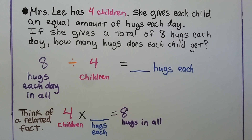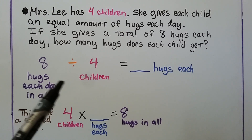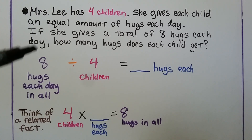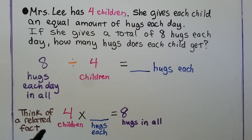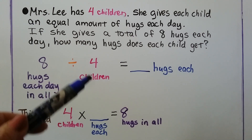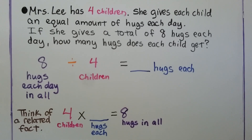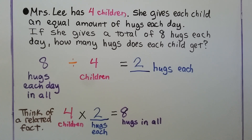Mrs. Lee has 4 children. She gives each child an equal amount of hugs each day. If she gives a total of 8 hugs each day, how many hugs does each child get? We know she's doing a total of 8 hugs each day. We know she also has 4 children. 8 divided by 4 is equal to how many hugs they each get. We can think of a related fact: 4 children times some number of hugs is equal to 8 hugs in all. If we remember 4 times 2 is equal to 8, then we know that 8 divided by 4 is equal to 2. We used a related multiplication fact to help us solve a division problem.